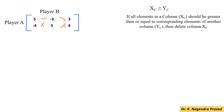Similarly, check the 3rd column elements with the 1st and 2nd columns. First, compare the 3rd column elements with the 1st column. So, 3 is not greater than 5. So, the condition is not satisfied.